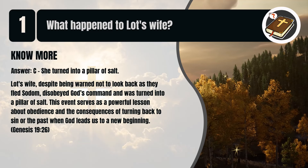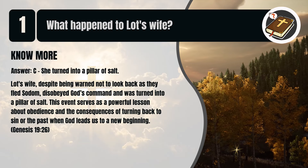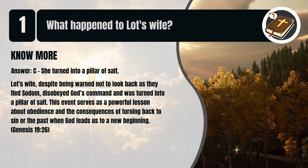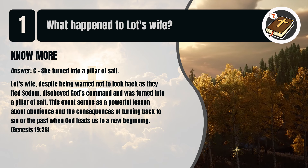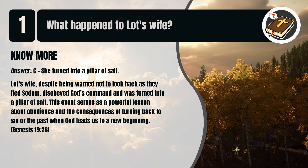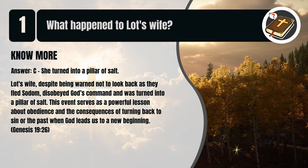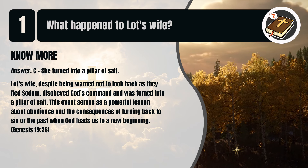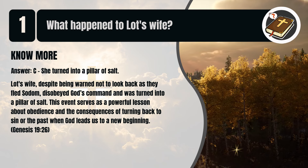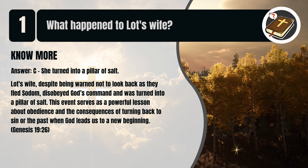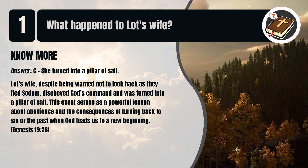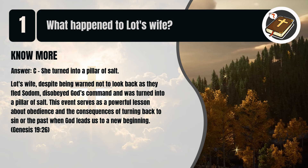That's C. She turned into a pillar of salt. Lot's wife, despite being warned not to look back as they fled Sodom, disobeyed God's command and was turned into a pillar of salt. This event serves as a powerful lesson about obedience and the consequences of turning back to sin or the past when God leads us to a new beginning. Genesis chapter 19 verse 26.